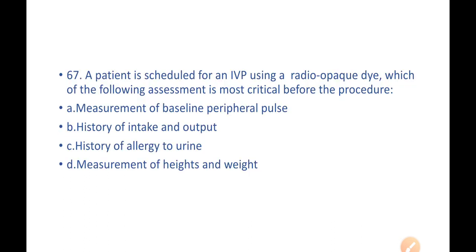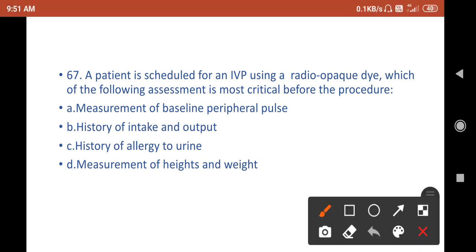Next question: A patient is scheduled for an IVP using a radio-opaque dye. Which of the following assessment is the most critical before the procedure? A) Measurement of baseline peripheral pulse, B) History of intake and output, C) History of allergy to urine, D) Measurement of height and weight. Guys, this is wrong—it is history of allergy to iodine. There is a spelling mistake, so please excuse me.